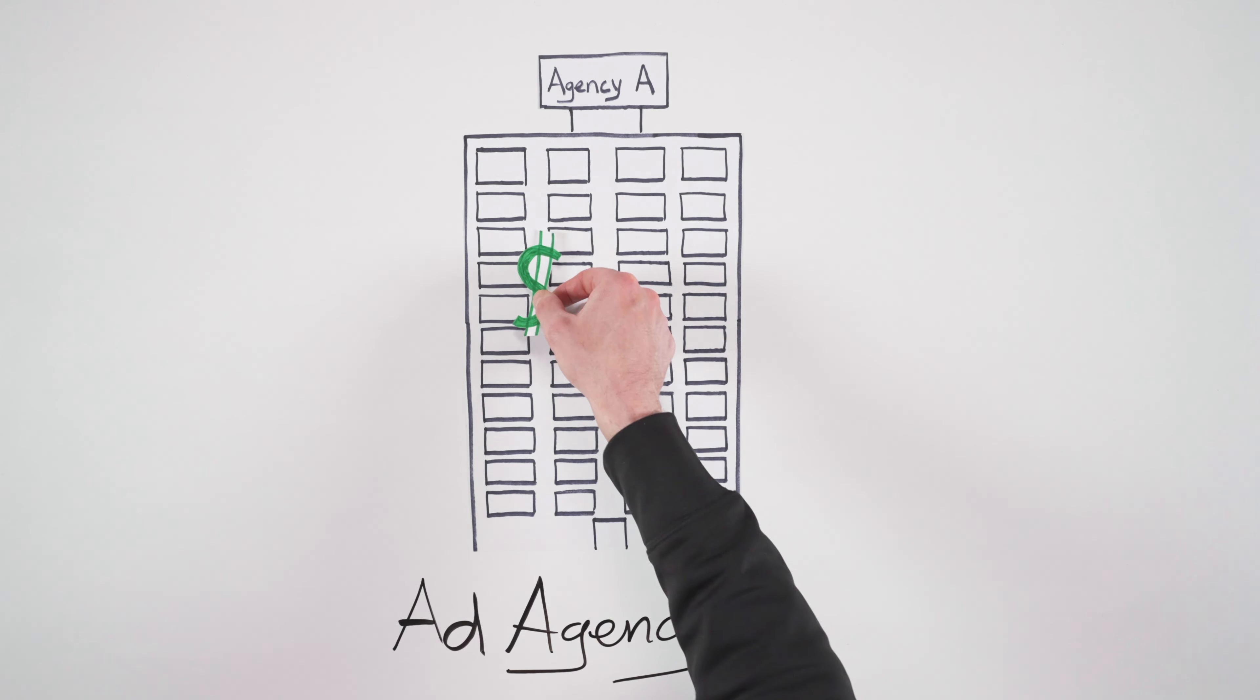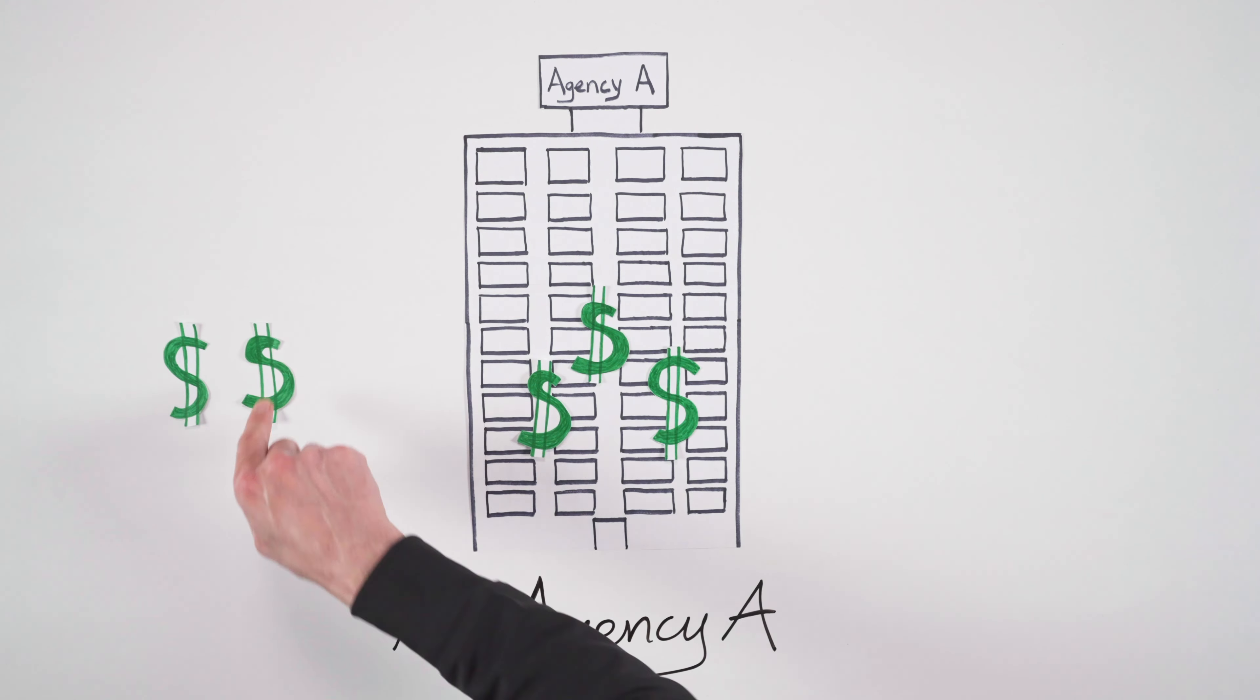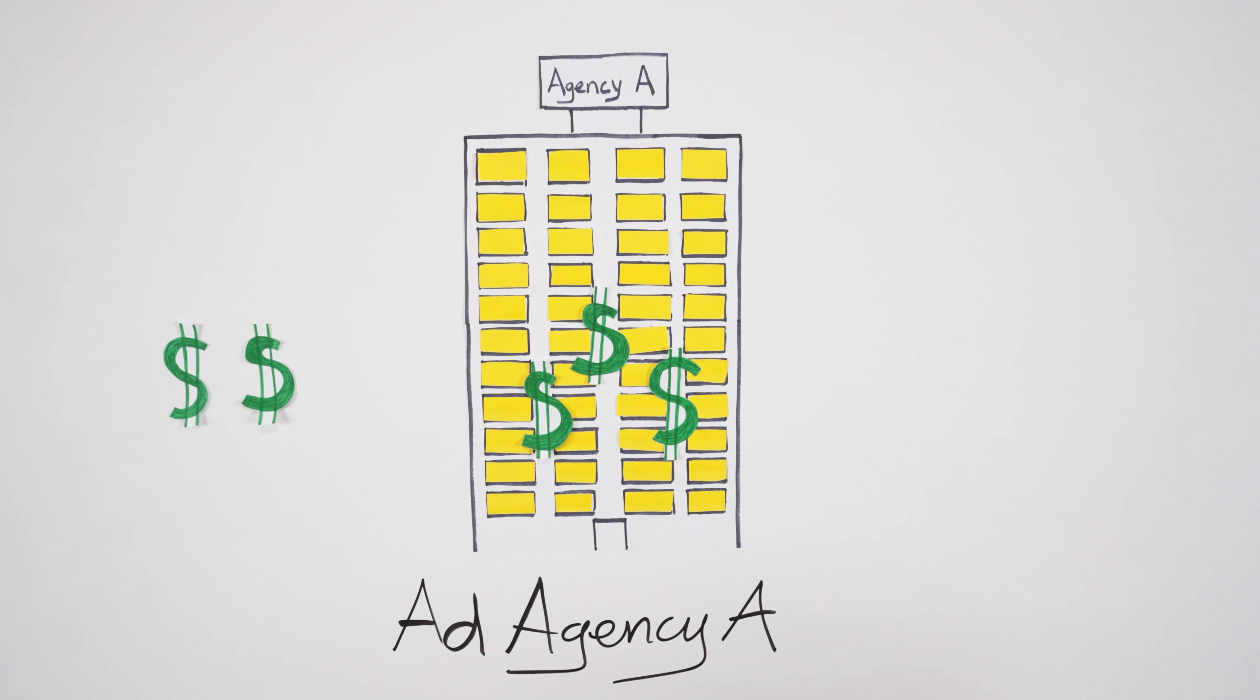Not some of your budget. All of your budget. Because Agency A has to pay the rent you know and keep all of those lights on. So many lights.